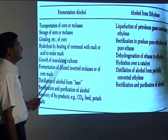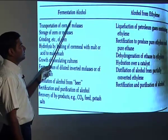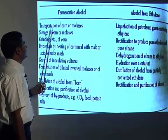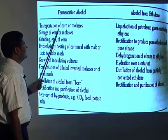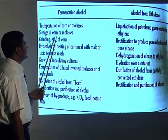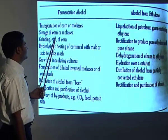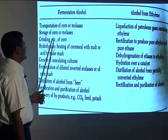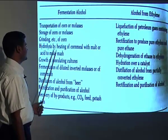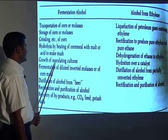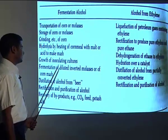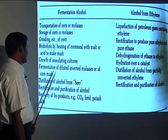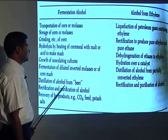There are major differences between fermentation alcohol and alcohol from ethylene. For fermentation alcohol, the process uses corn and molasses, then storage of these raw materials, then grinding, then hydrolysis, then growth of an organizing culture, then fermentation of the corn mash, and finally distillation.